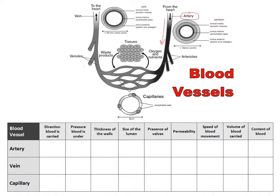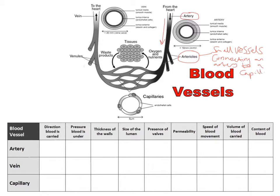We can see that the artery branches into what are called arterioles. We're going to describe what arterioles are because this is really about artery, vein and capillary — the three main blood vessels. These are small vessels that connect arteries to capillaries. For some exam specifications they're not on-spec, but I've included them so that you're aware of what we're referring to. So the artery narrows essentially into what's called an arteriole — a smaller vessel connecting an artery to a capillary.